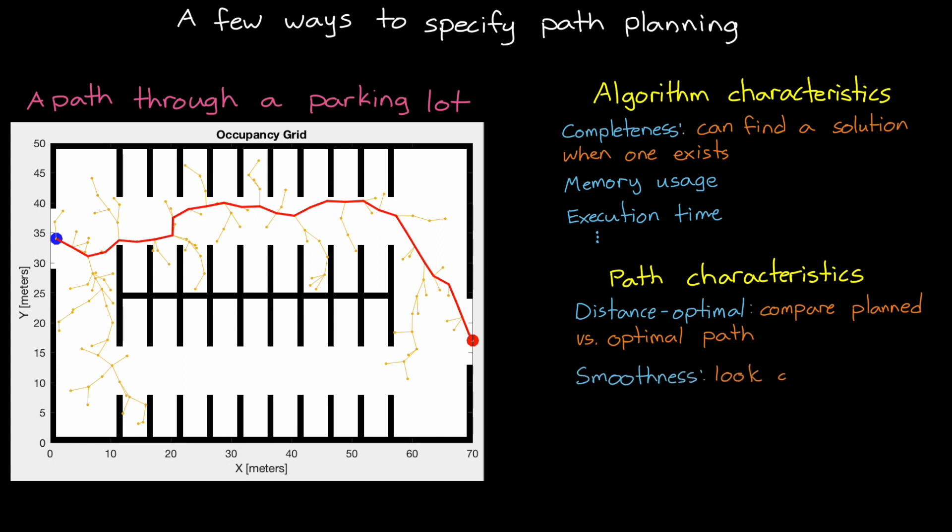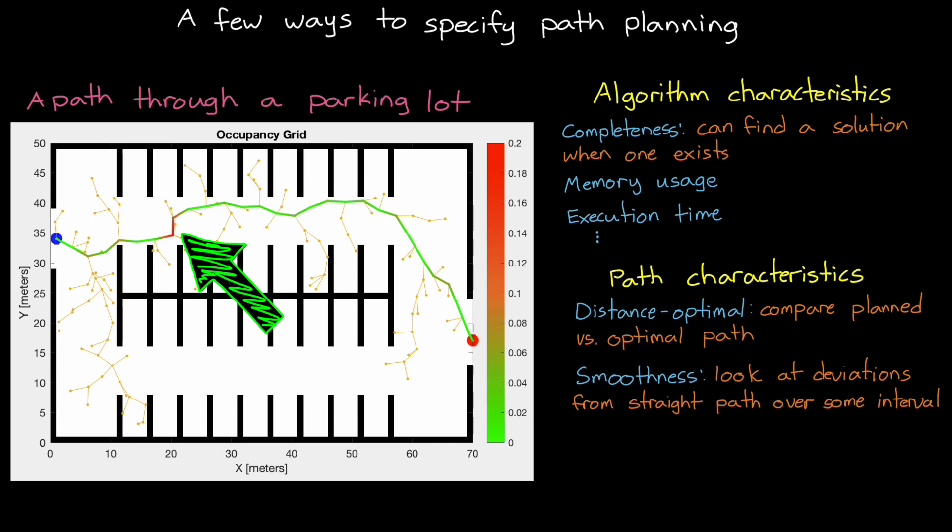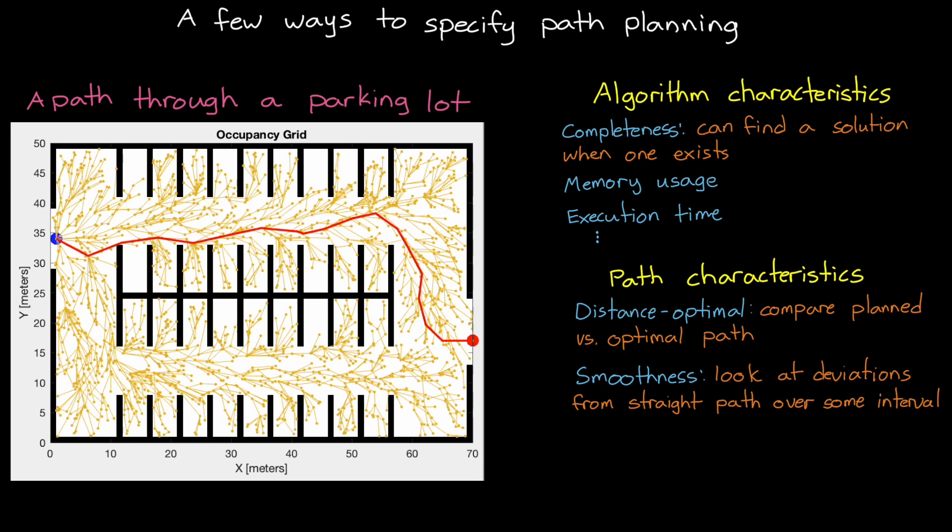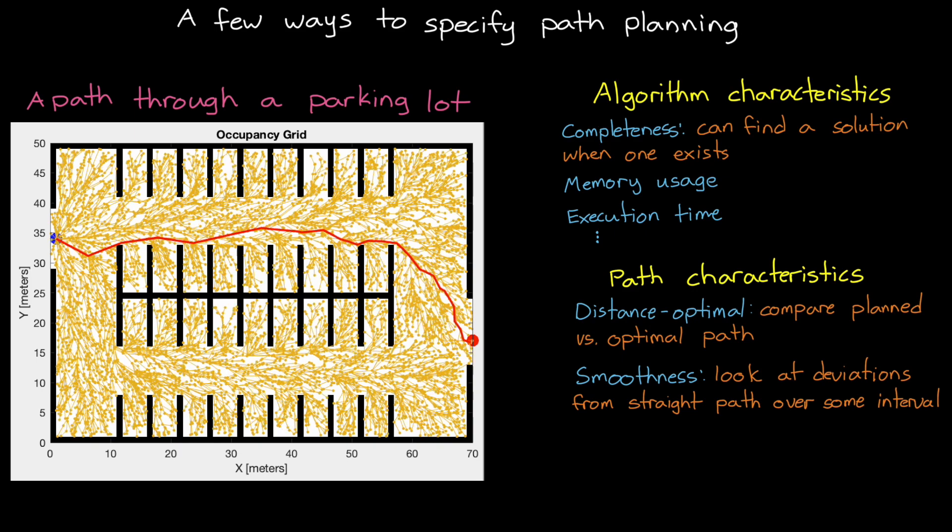For passenger comfort, we may require that the path is sufficiently smooth. You know, it wouldn't be a great ride if your autonomous car instantly jerked to the left. So we could assign smoothness values based on how much the path deviates from a straight line over some specified interval. The larger this metric, the less smooth the ride would be. And if the returned path doesn't meet the smoothness specification, we may have to re-plan in hopes of finding a smoother solution, or we might just have to change the algorithm altogether.